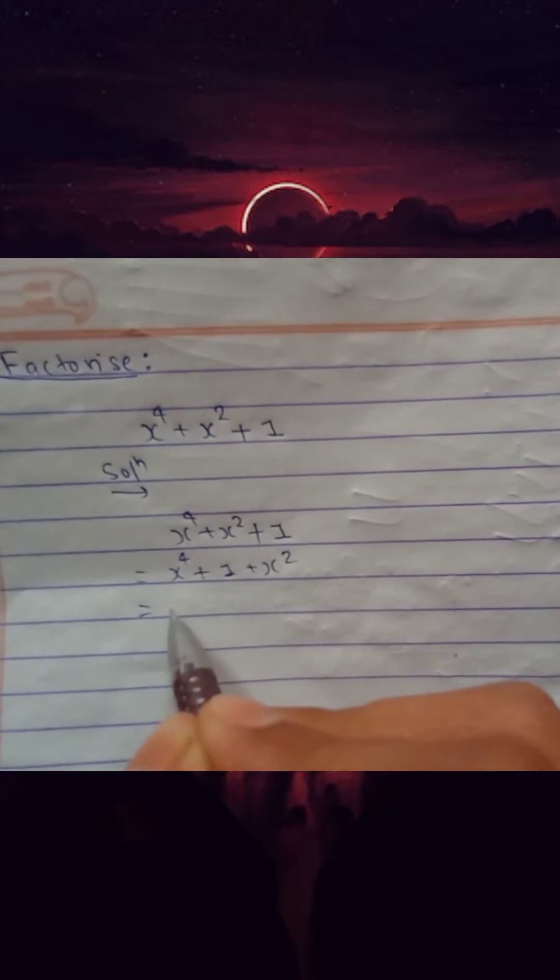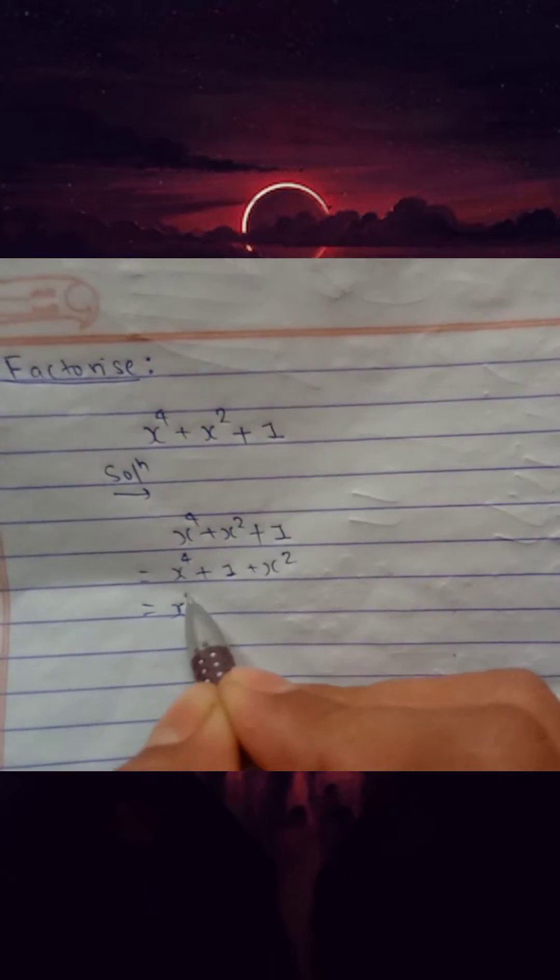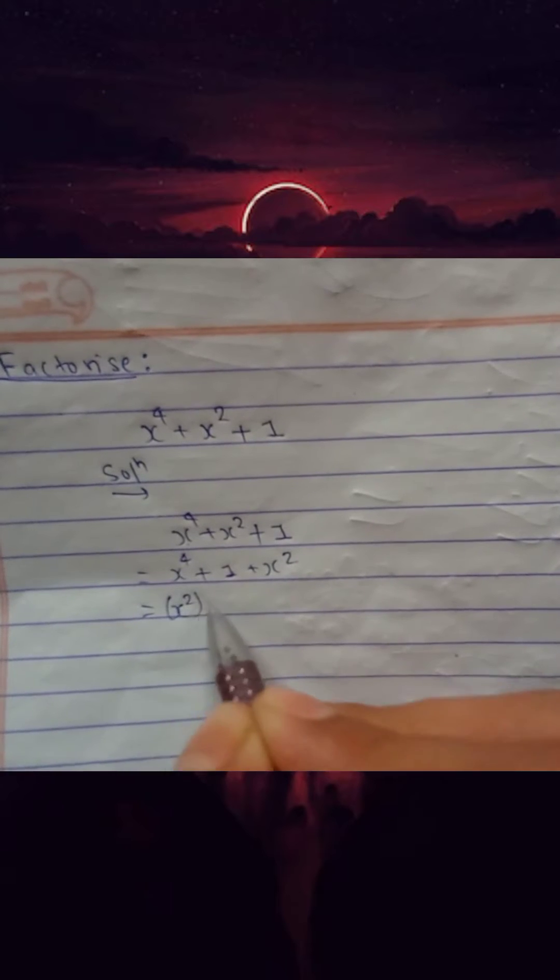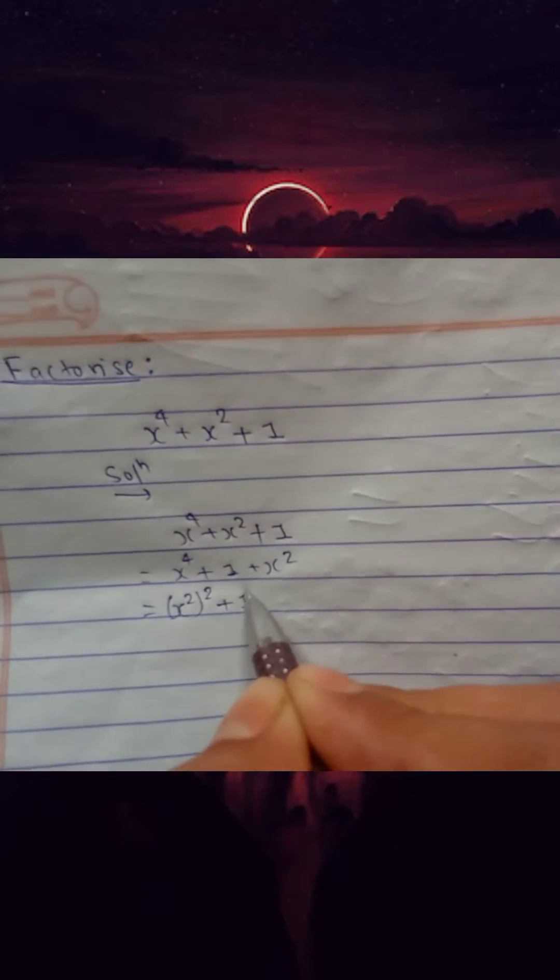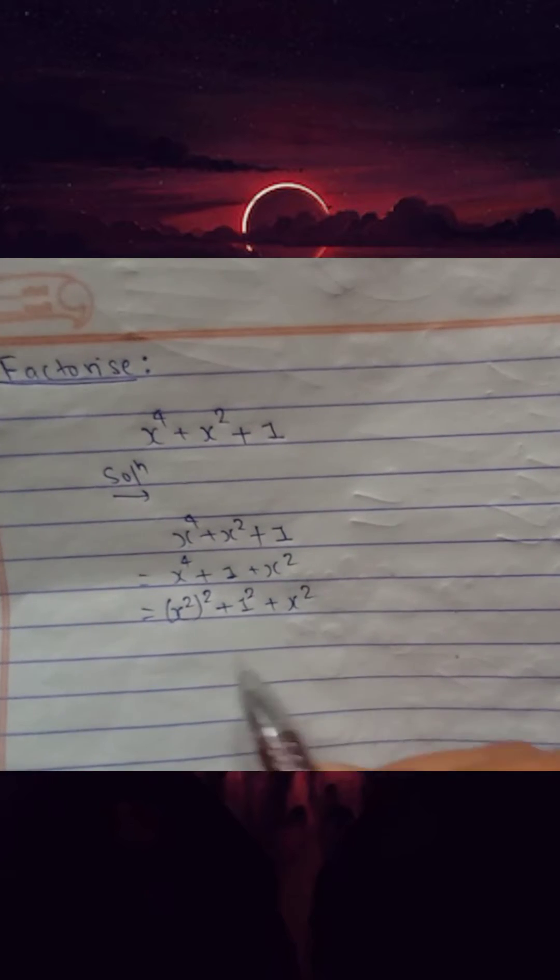Firstly, use the formula a square plus b square. Just arrange this x to the power 4 in this way, and 1 can be also written as 1 square plus x square.